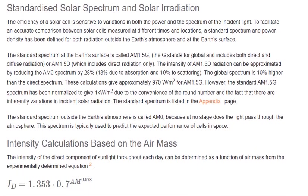The standard spectrum is listed in the appendix page. The standard spectrum outside the earth's atmosphere is called AM0, because at no stage does the light pass through the atmosphere. This spectrum is typically used to predict the expected performance of cells in space.